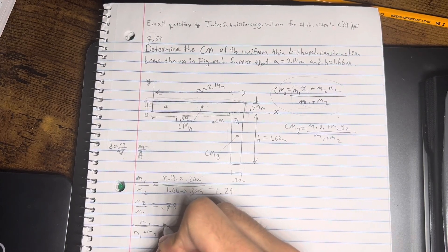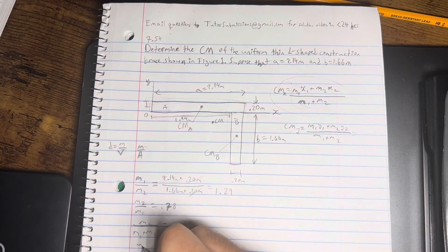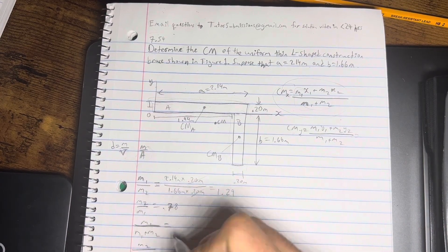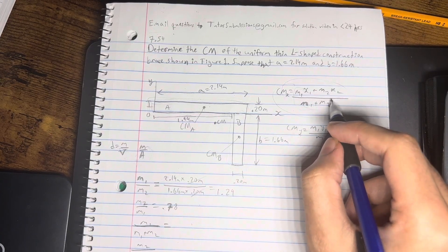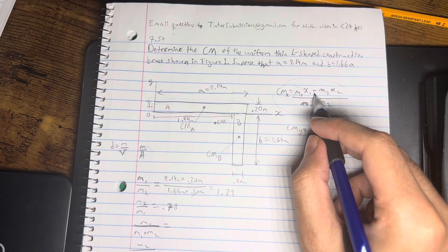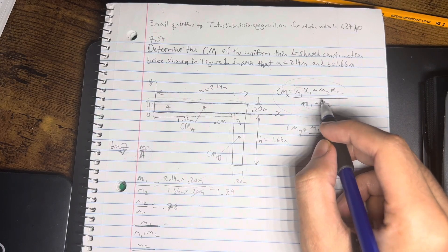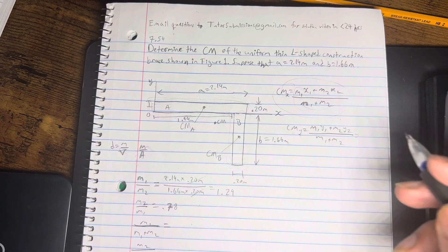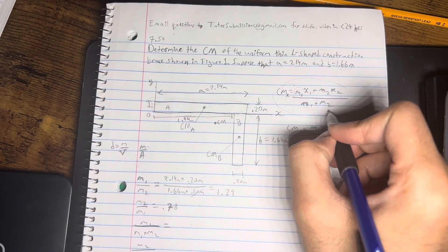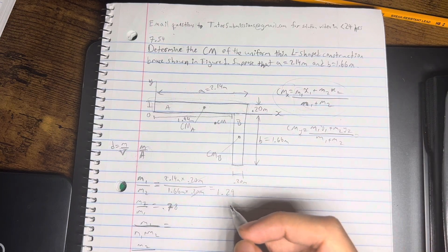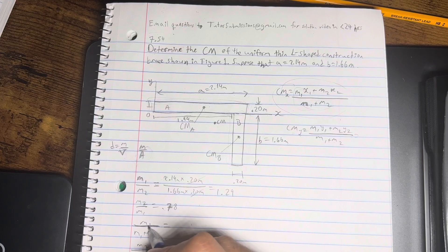So, M1 over M1 plus M2. And then we're also going to do the same thing for M2, M2 over M1 plus M2 because here, we can split these apart by writing M1 X1 over M1 plus M2 and then plus the other fraction which is M2 times X2 over M1 plus M2.